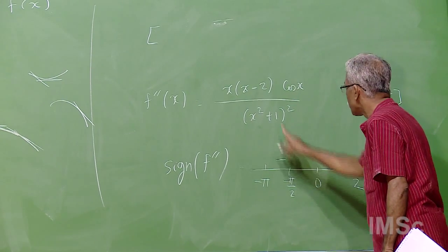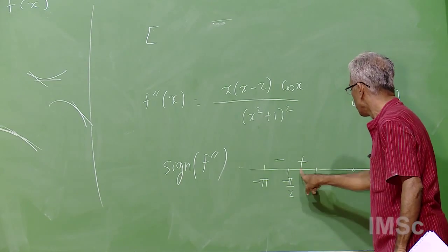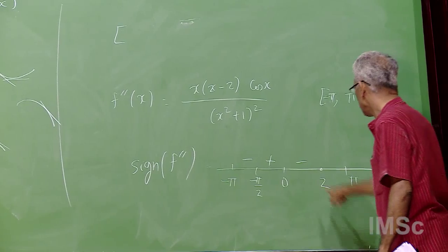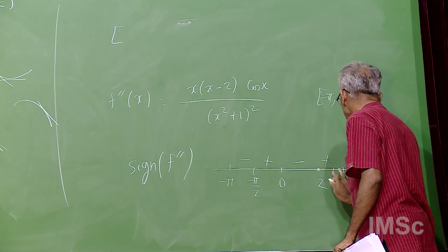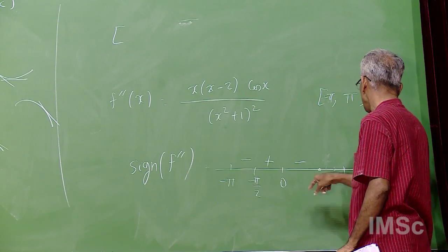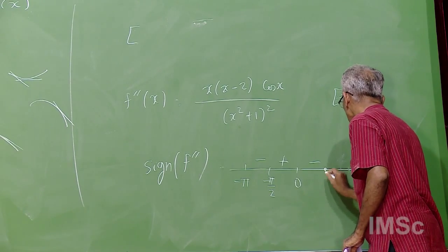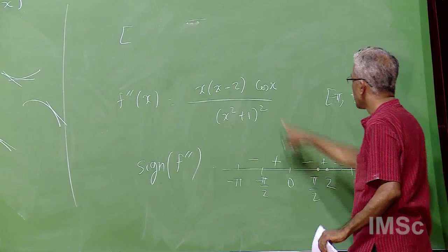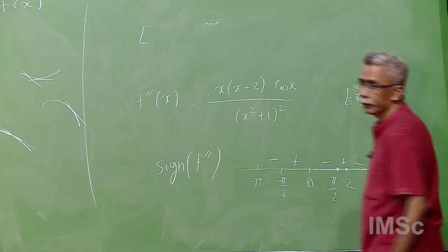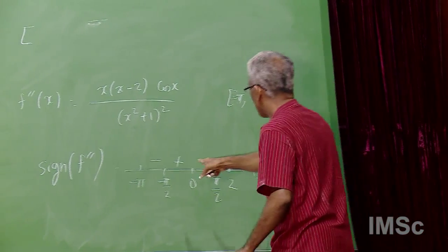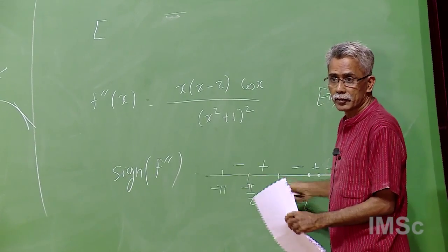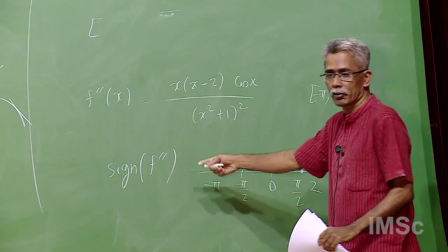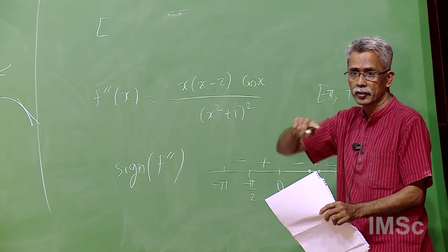From the sign diagram, you can determine intervals where the function is concave up or concave down. This type of information — the sign of f double prime — lets you deduce about f. This sign diagram is much more helpful in understanding the graph of the given function.